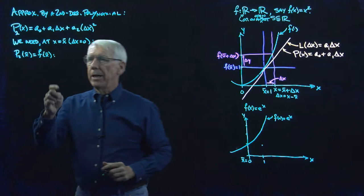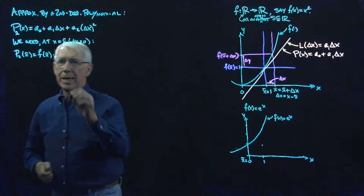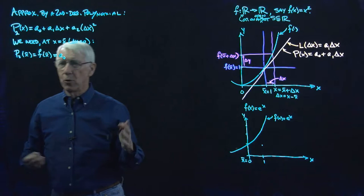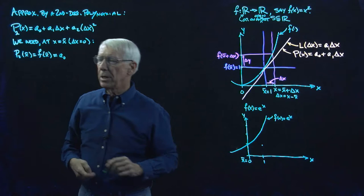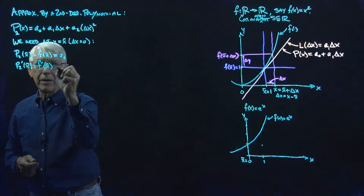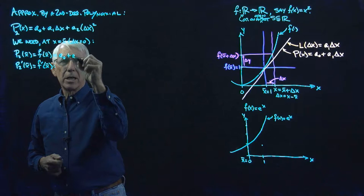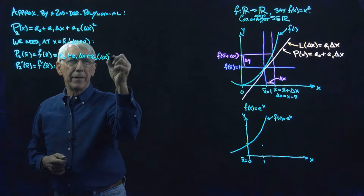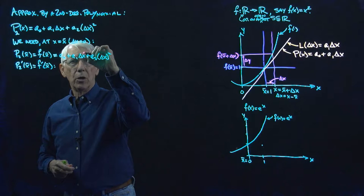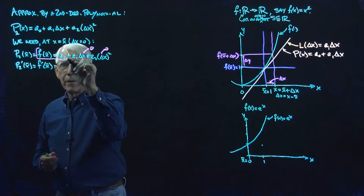If we want f of x-bar to equal p2 of x-bar, when delta x is zero, p2 is just a-naught. So a-naught equals f of x-bar — nothing new here, except there's this extra term, but when delta x is zero, that drops out. So a-naught should be f of x-bar.